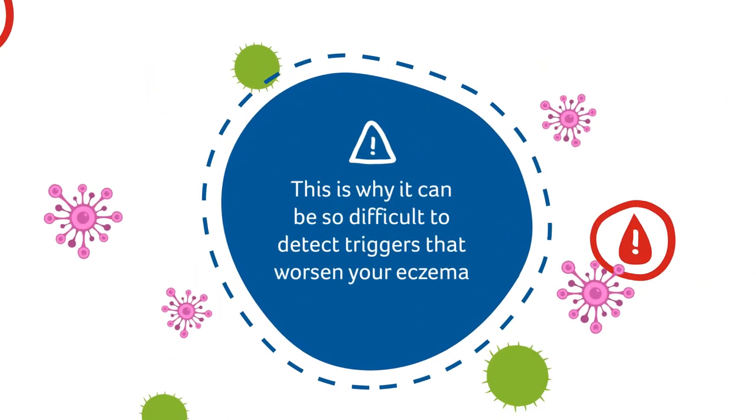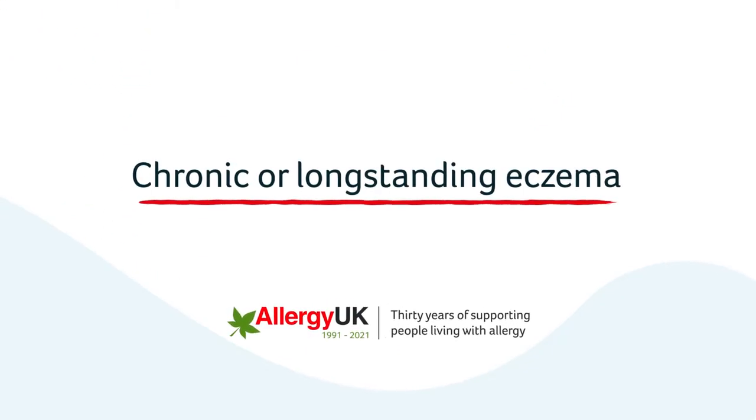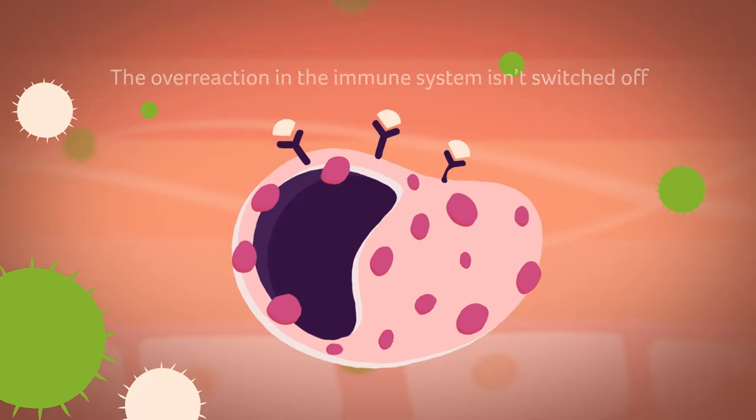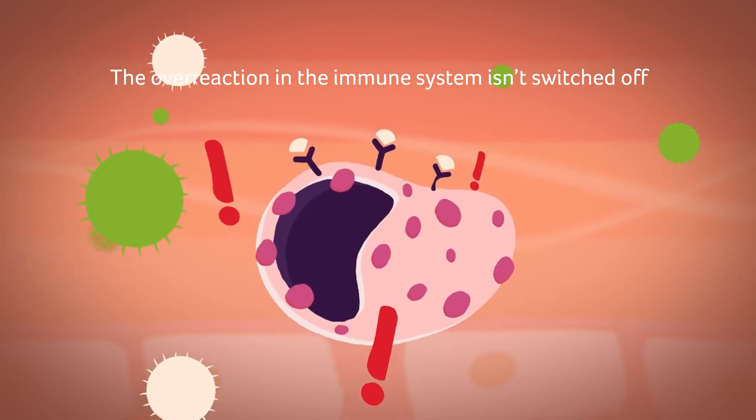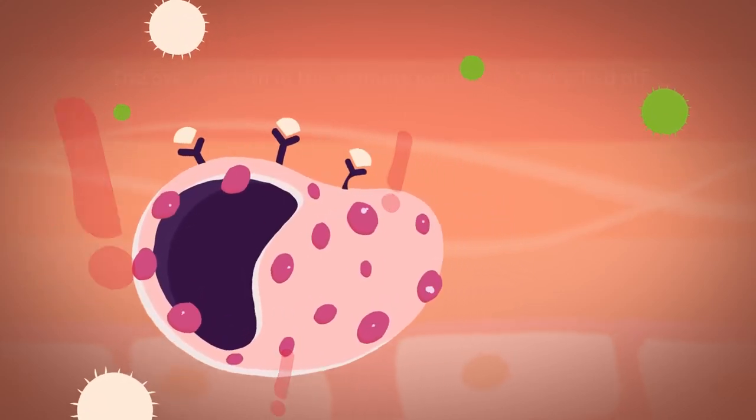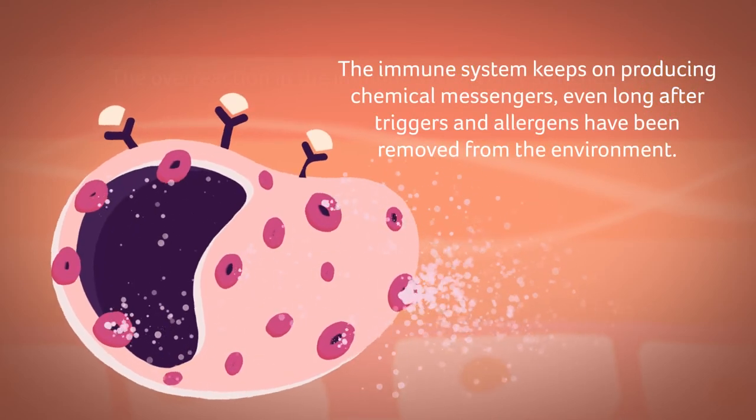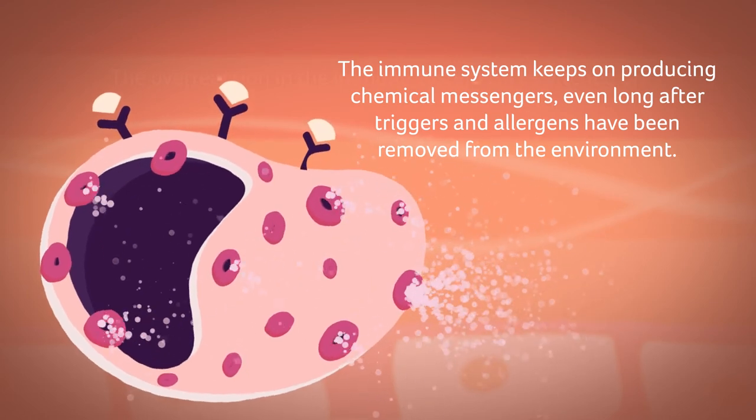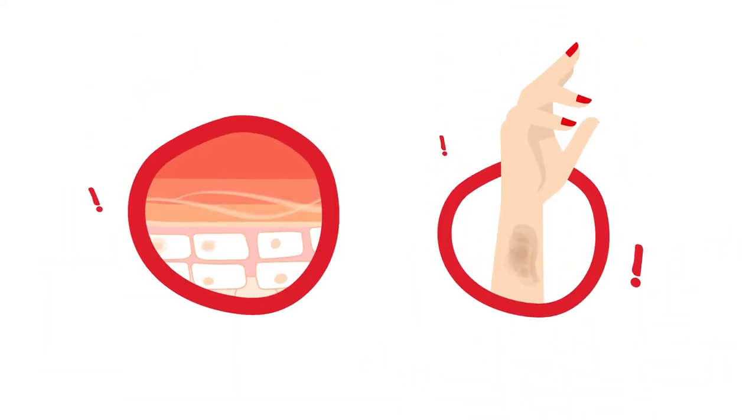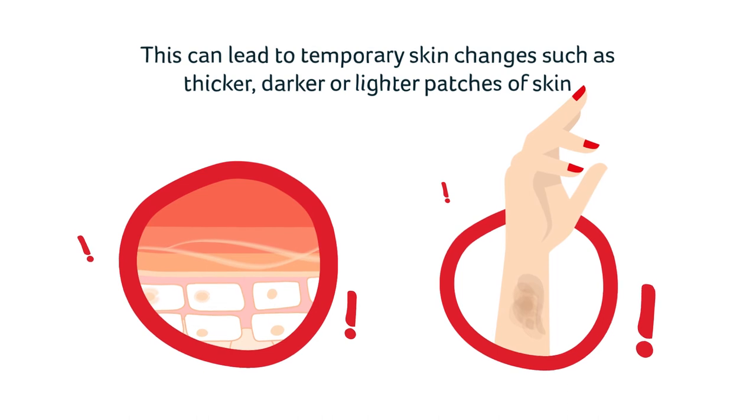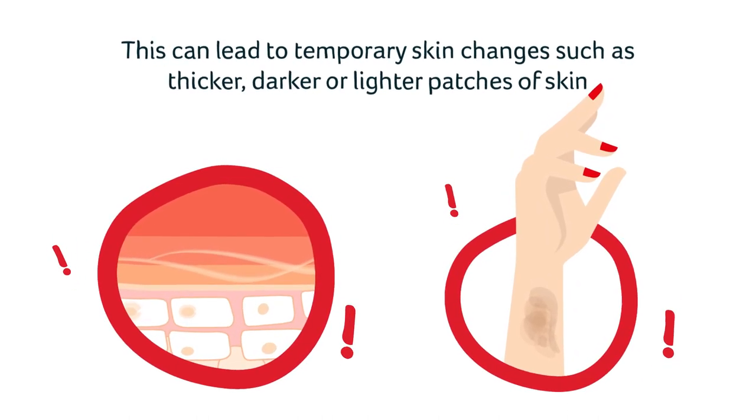Chronic or long-standing eczema can be very difficult to treat. The overreaction in the immune system isn't switched off and the immune system keeps on producing chemical messengers to try to protect itself, even long after triggers and allergens have been removed from the environment. This can lead to temporary skin changes such as thickening of the skin called lichenification, and patches of the skin darkening or lightening called inflammatory pigmentation.